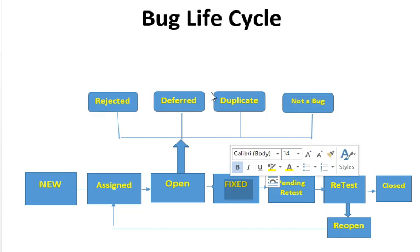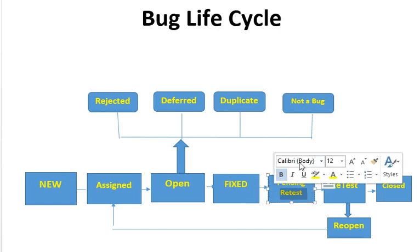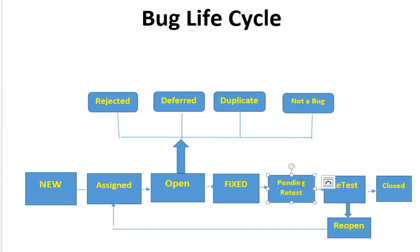The next stage is Fixed. After analysis and recreation, the developer fixes the defect and checks in the fixed code into the code management system, then moves the defect to the Fixed state. The next state is Pending Retest — this is when the fix of the defect is awaiting retesting by the tester.